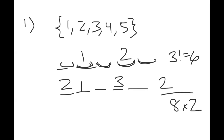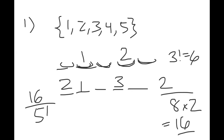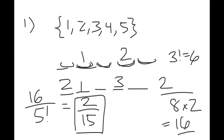So the total number of W permutations is 8 × 2 = 16. The total number of permutations is 5!. So the probability simplifies to 16/120 = 2/15, which is our answer.